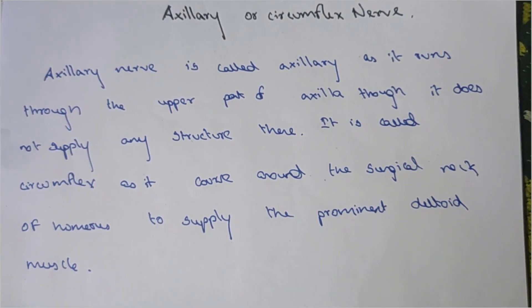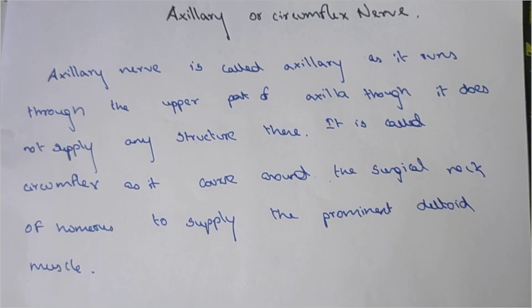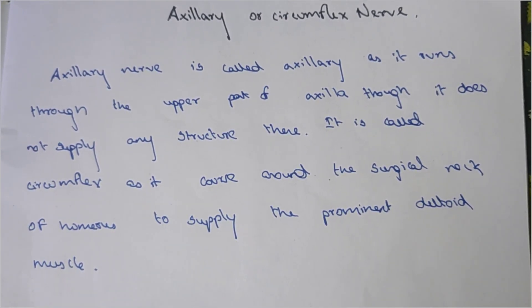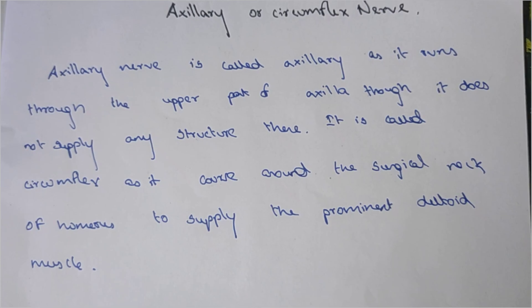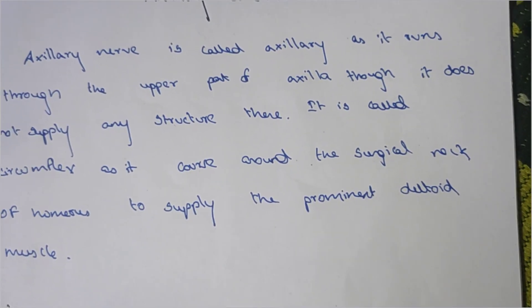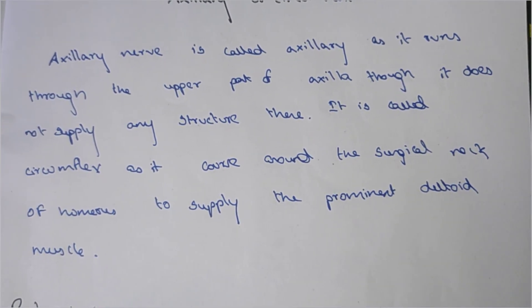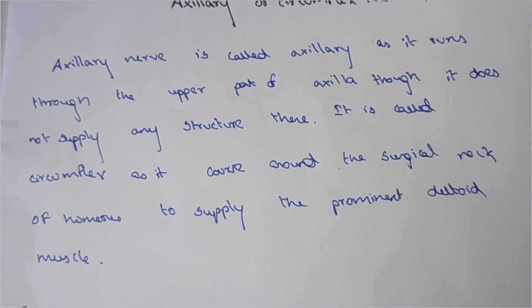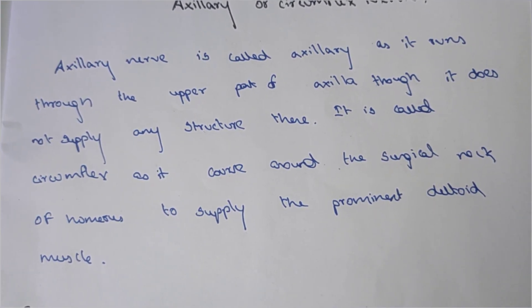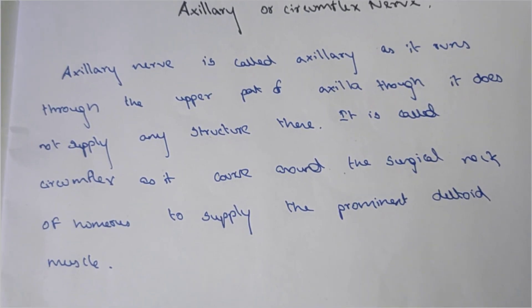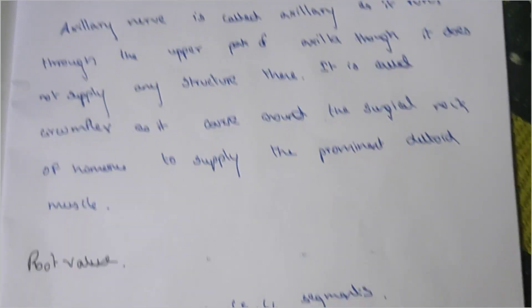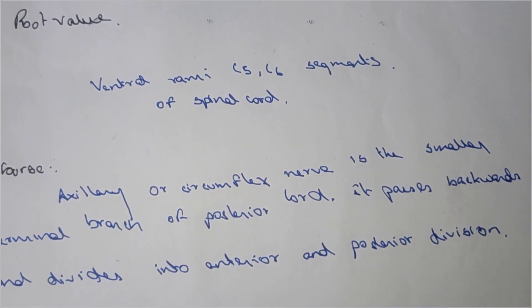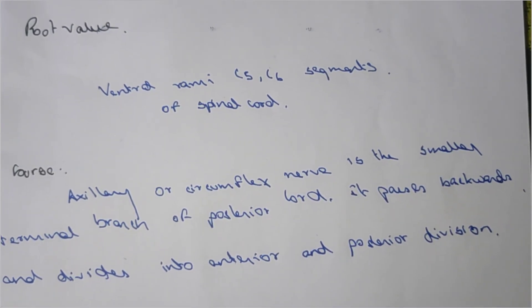The axillary nerve is otherwise known as the circumflex nerve. It is called the axillary nerve because it runs through the upper part of the axilla, though it does not supply any structures there. It is known as circumflex because it courses around the surgical neck of the humerus to supply the deltoid muscle.